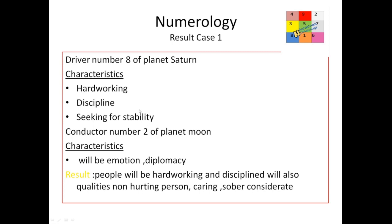So what will be the result of this combination? Jai will be very hardworking and disciplined, and will also have qualities of a nurturing person. Moon represents emotion and Saturn shows discipline, so such a person will be very caring, sober, and considerate.